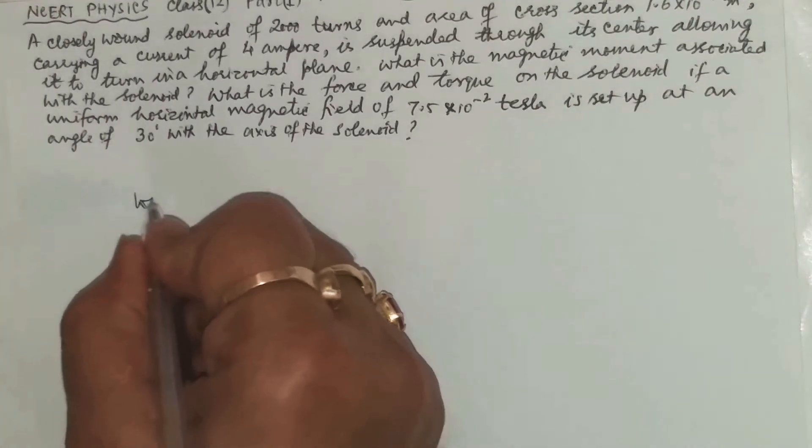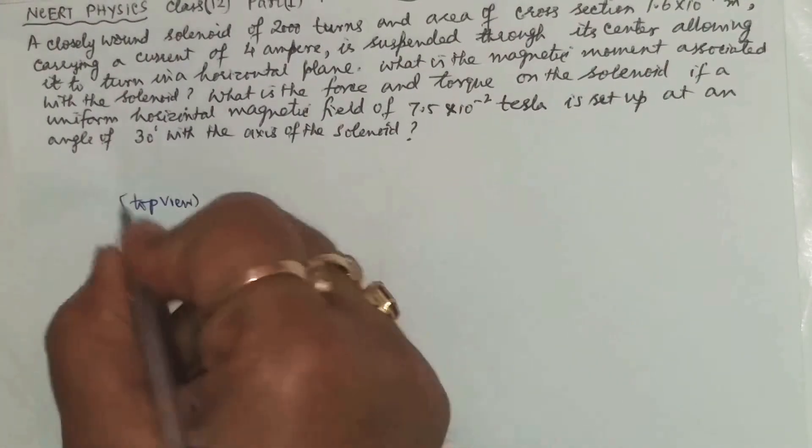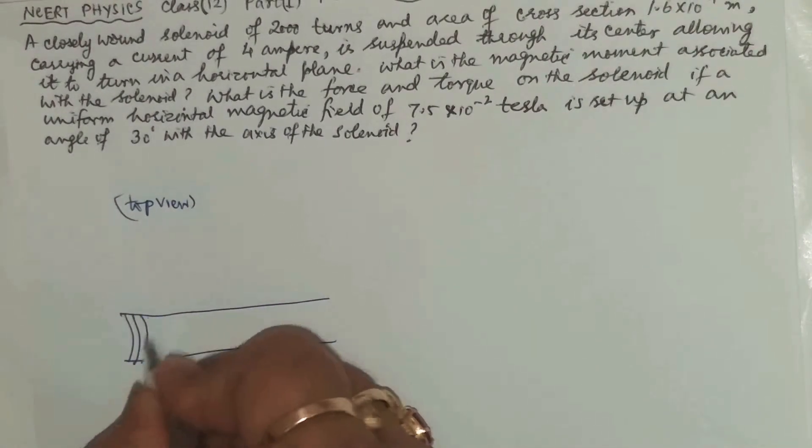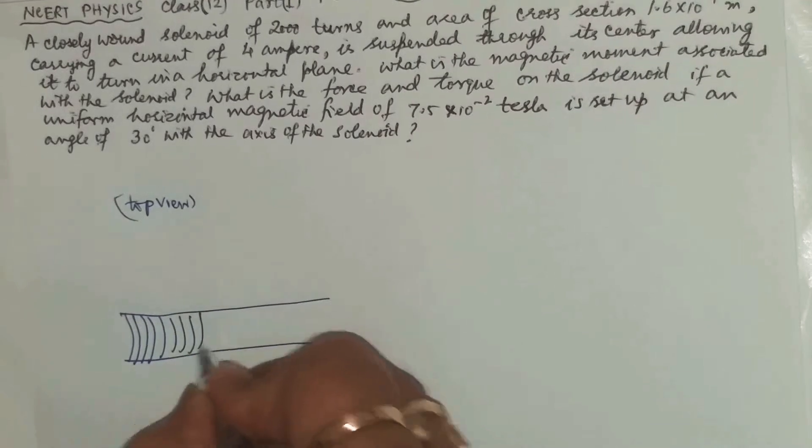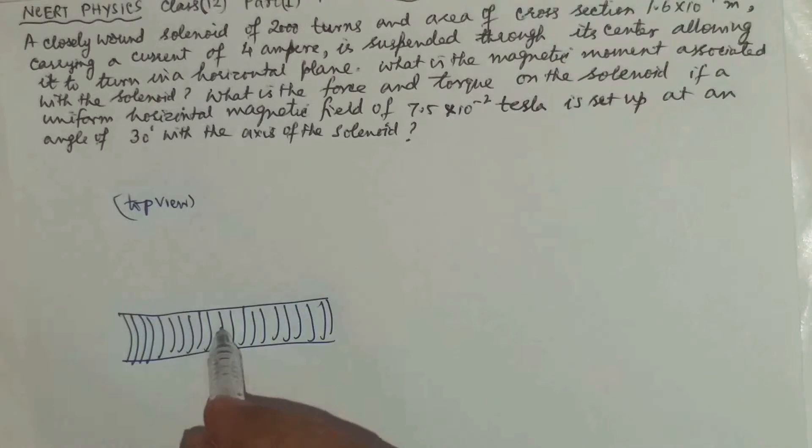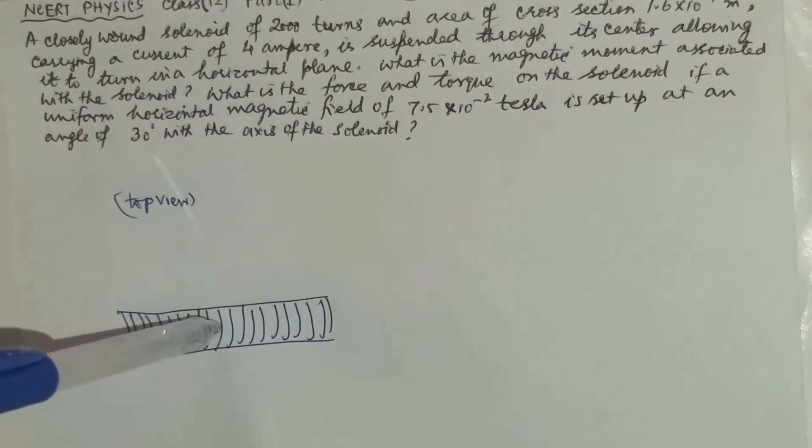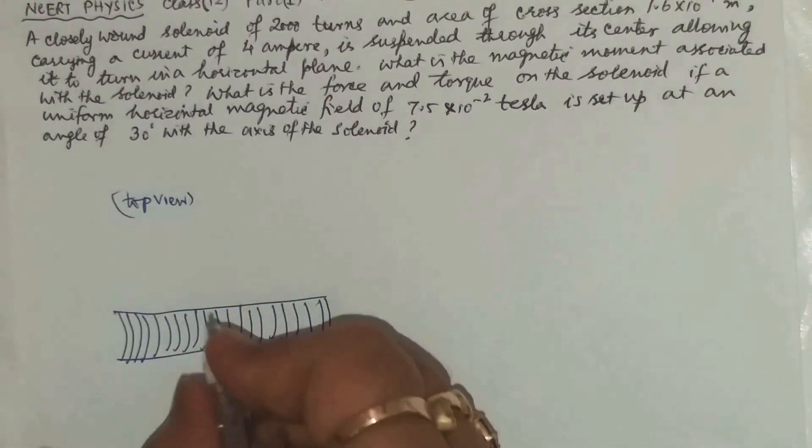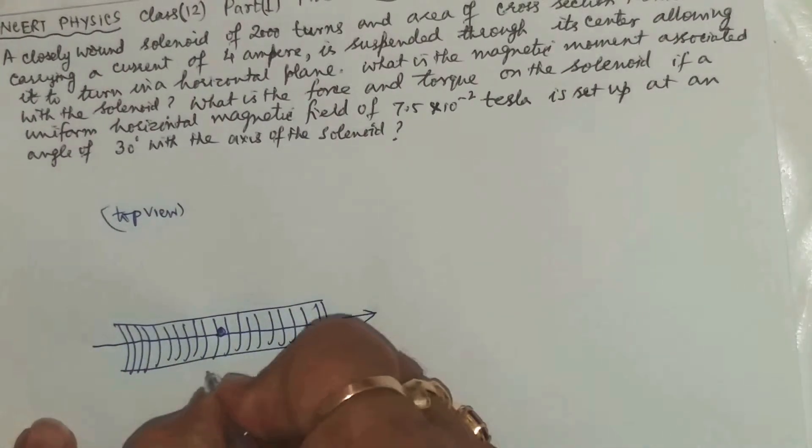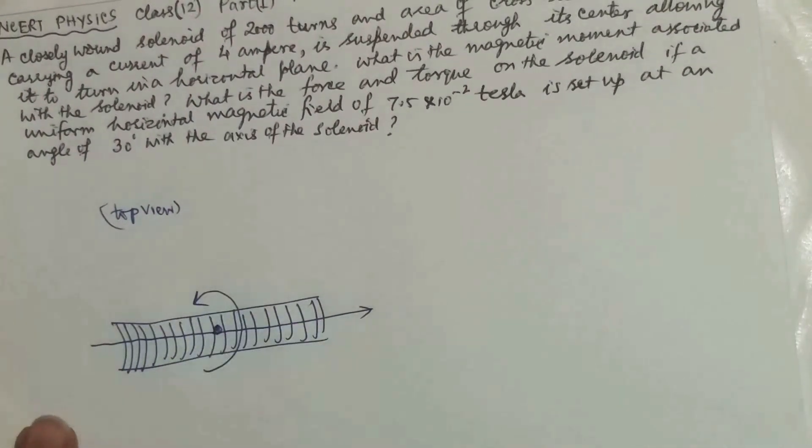So let us take a top view of this solenoid. The top view of this solenoid as there are many closely wound turns and it is suspended like this, you can see the figure, about this axis. Therefore about this axis, this is the axis and perpendicular to this it may rotate in this direction.